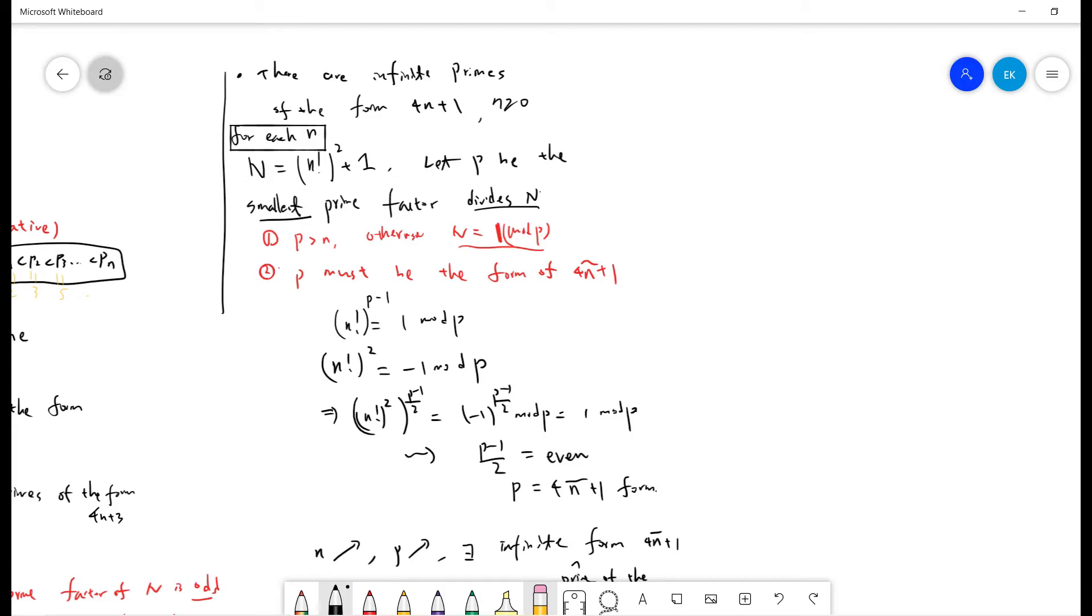And let p be the smallest prime factor dividing N. Notice that N is odd, because n factorial is even when n greater or equal to 2. So N is odd, so p is odd.